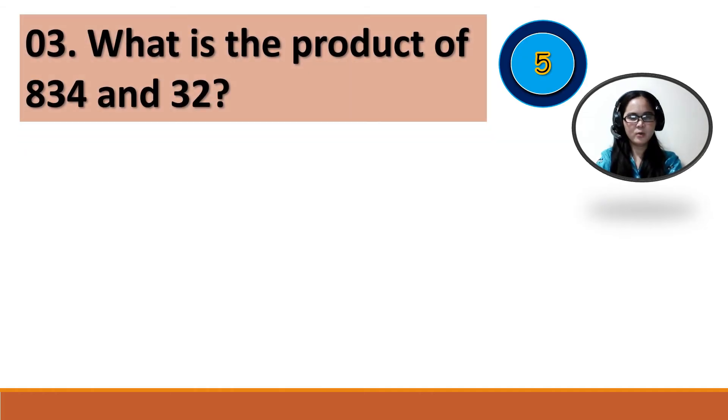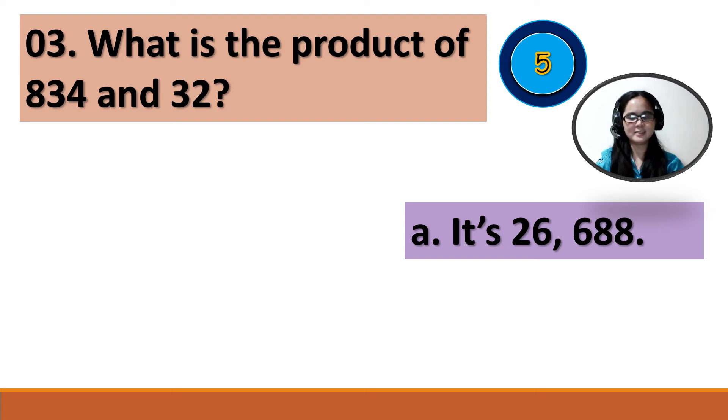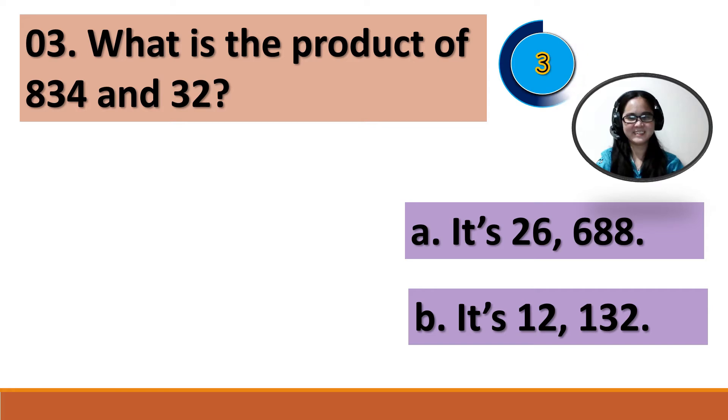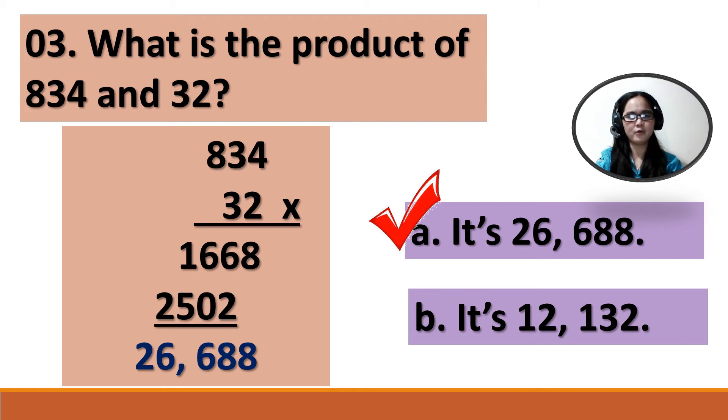Number 3: What is the product of 834 and 32? A. It's 26,688. B. It's 12,132. Your time starts now. Times up. The correct answer is letter A. It's 26,688. So, 834 times 32 equals 26,688.